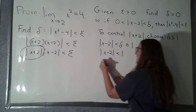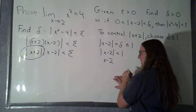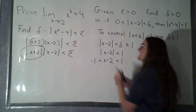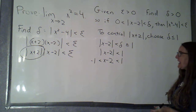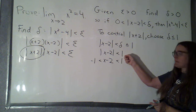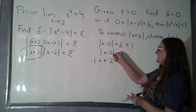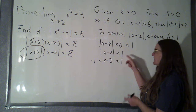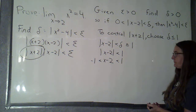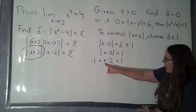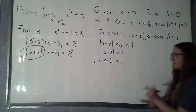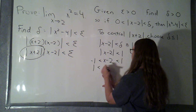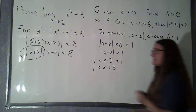And what that means is that x minus 2 is trapped between negative 1 and 1. Anytime an absolute value is smaller than some number, the quantity inside the absolute value lies in between that number and its opposite. But now I can solve this for x — I'm just going to add 2 to each piece, so I get 1 is less than x is less than 3.